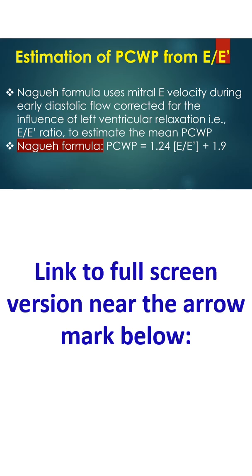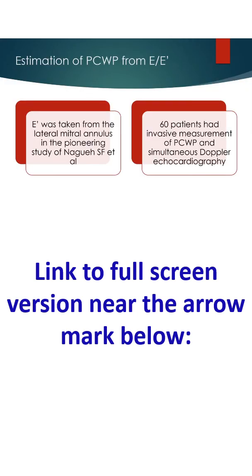Nagueh formula is PCWP = 1.24 E/E' + 1.9. E' was taken from the lateral mitral annulus in the pioneering study of Nagueh and Associates.